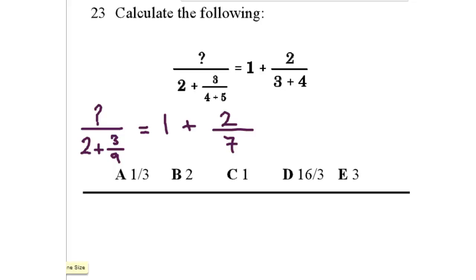Now 3 over 9 can be simplified, 3 divided by 3 is 1, 9 divided by 3 is 3. So you basically have something over 2 plus 1 third.